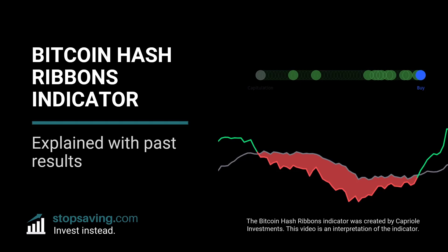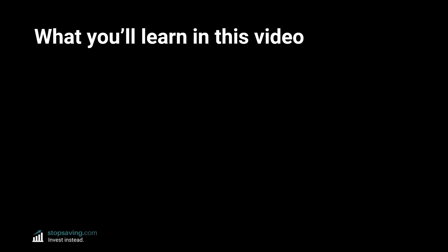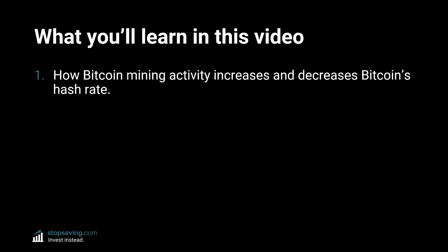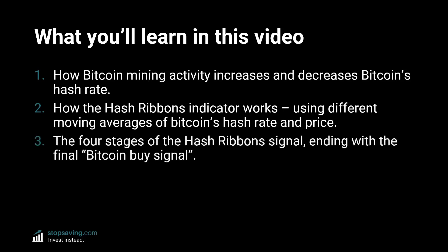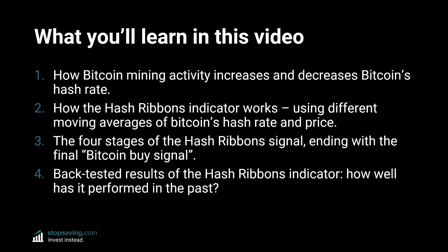By the end, you'll know whether to include the indicator in your own strategy and how to use it if you do. Here's what you'll learn in this video: number one, how Bitcoin mining activity increases and decreases Bitcoin's hash rate; two, how the Hash Ribbons indicator works using different moving averages of Bitcoin's hash rate and price; number three, the four stages of the Hash Ribbon signal ending with the final buy signal; and number four, back-tested results of the Hash Ribbons indicator — how well it's performed in the past at timing Bitcoin buy signals.